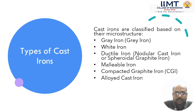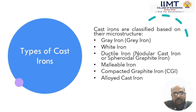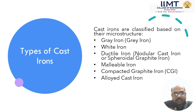Now we will discuss different types of cast iron. Basically cast iron is classified based on its microstructure. Cast iron has six different types: first one is grey cast iron, second one is white cast iron, next is ductile cast iron also known as nodular cast iron or spheroidal graphite cast iron, next is malleable cast iron, fifth is compacted graphite cast iron, and the last one is alloyed cast iron.